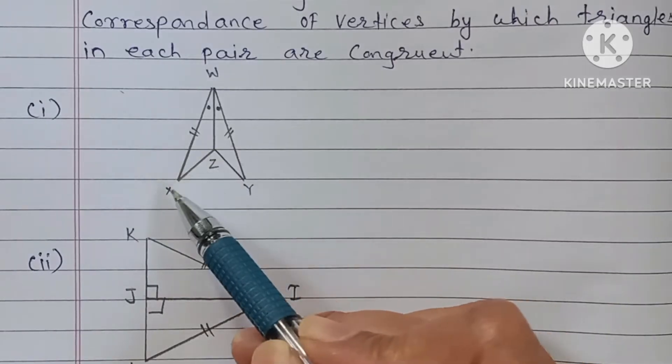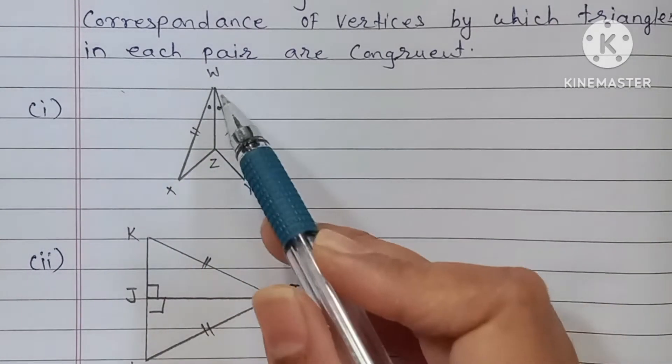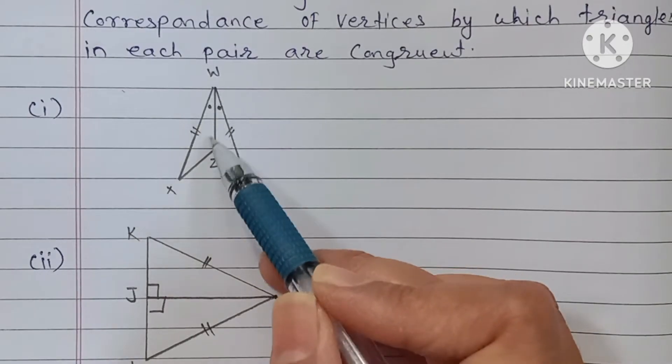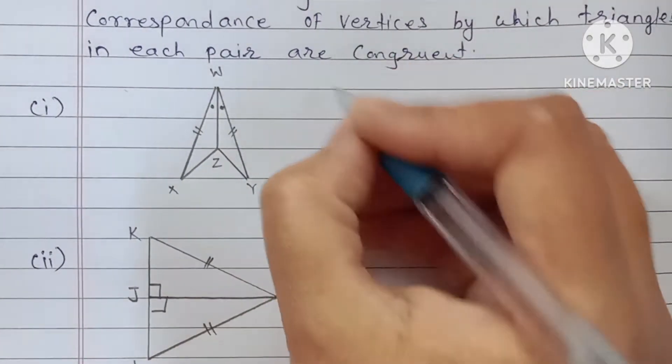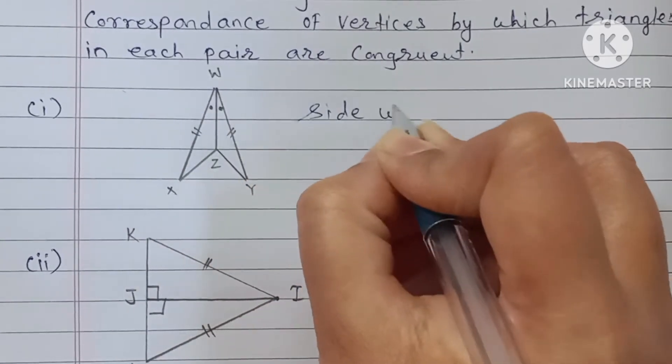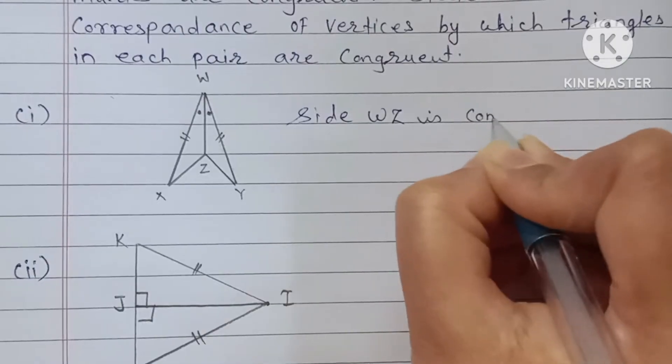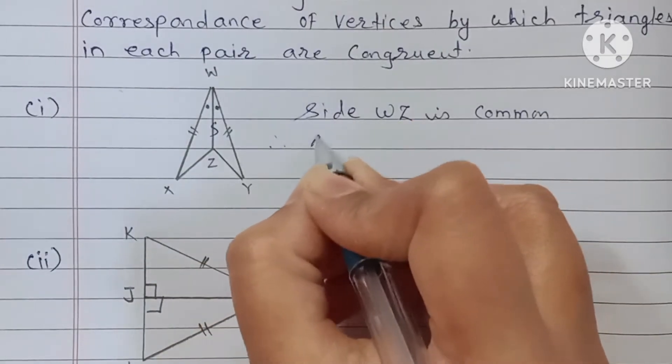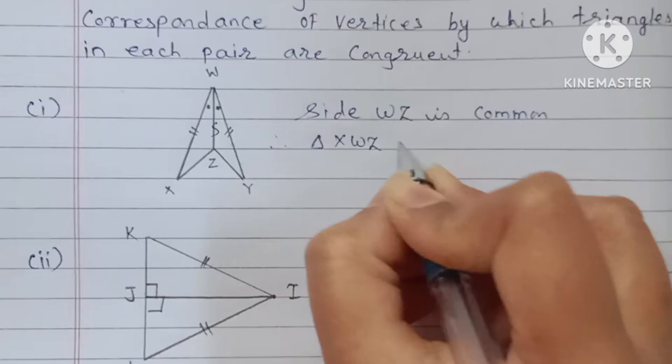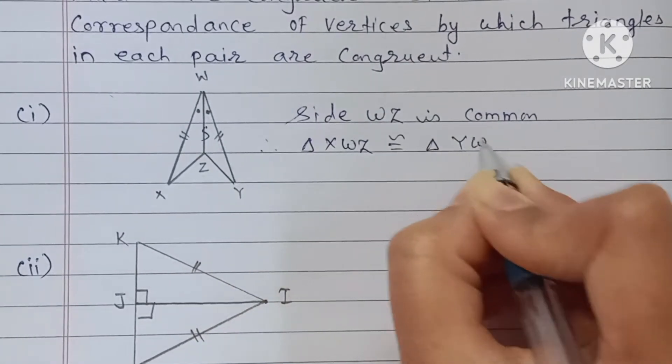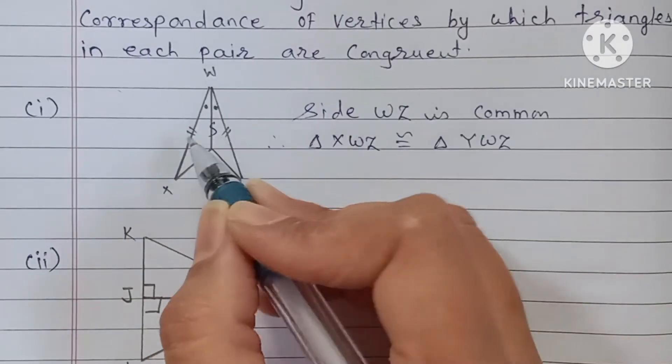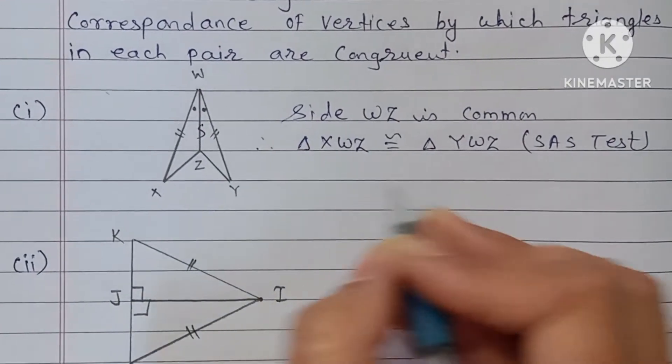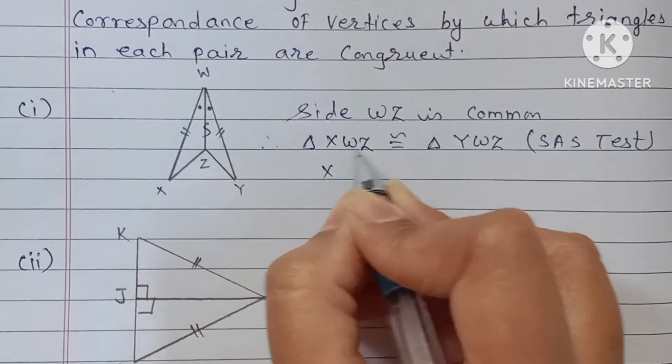First, triangle XWZ and triangle YWZ. These two are congruent by side-angle-side test. See, side, angle, and this side is common. Side WZ is common. Therefore, triangle XWZ is congruent with triangle YWZ by side-angle-side, means SAS test. One-to-one correspondence: XWZ corresponds to YWZ.